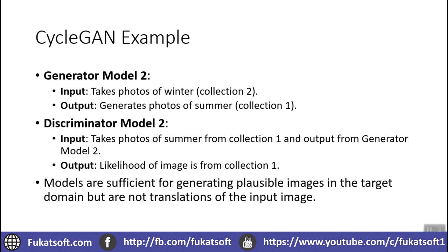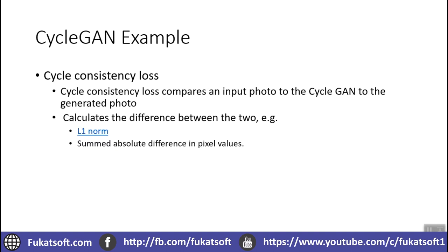The models will be able to generate plausible, photorealistic images, but images will not truly translate — meaning the same scenario and the same setup converted into the other landscape. So we use the cycle consistency loss. Cycle consistency loss compares an input photo to the image generated after passing through the cycle of two GANs.